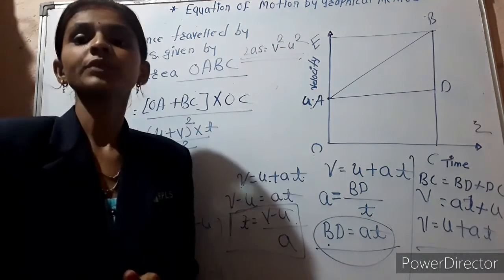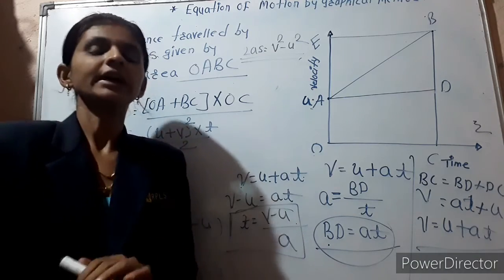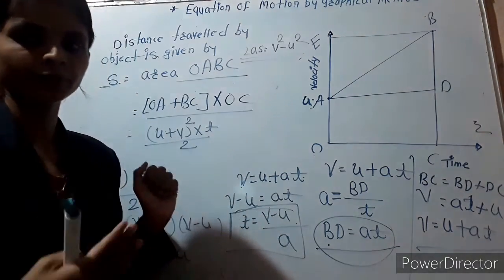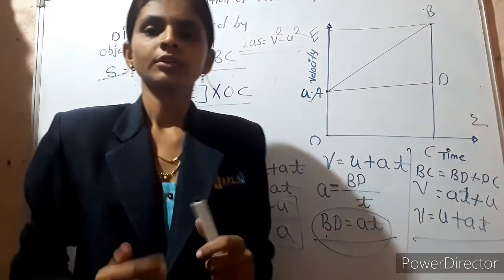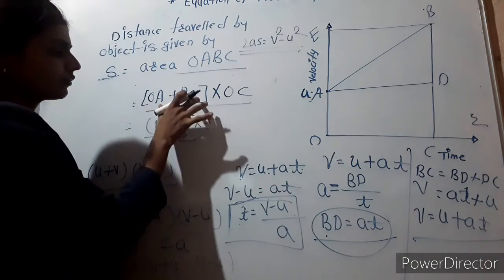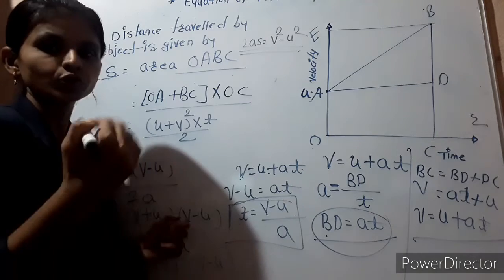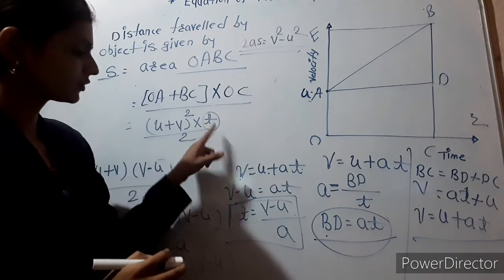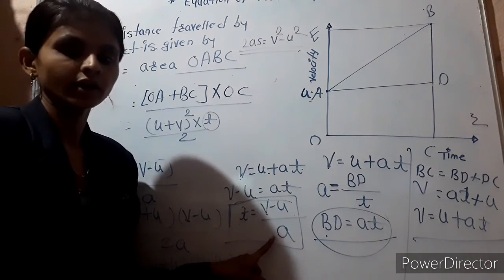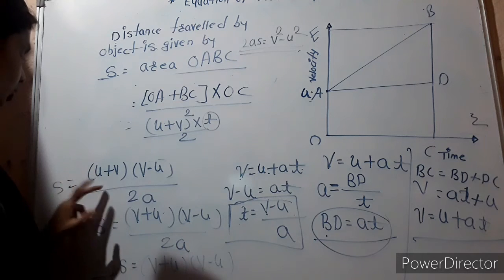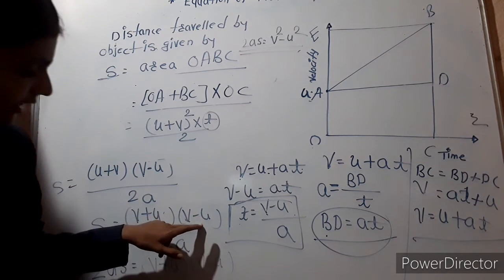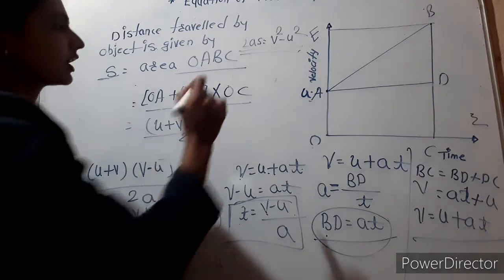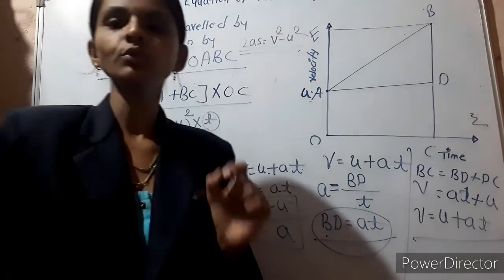v plus u multiplied by v minus u is none other than v squared minus u squared. So 2as is equal to v squared minus u squared. This is the third equation of motion. We found the area of the trapezium using the sum of parallel lines times height upon 2, replaced all values, used t equals v minus u upon a from the first equation, and arrived at 2as equals v squared minus u squared.